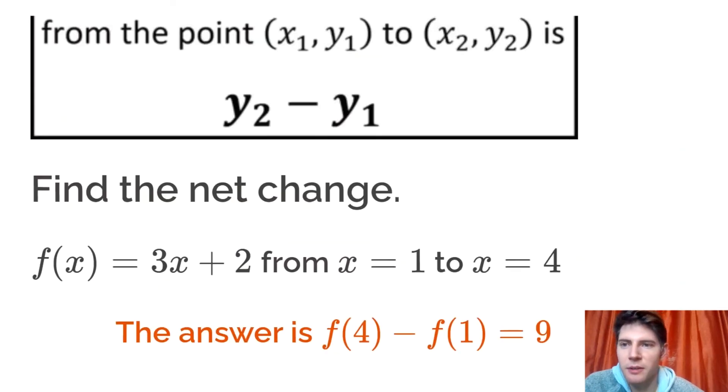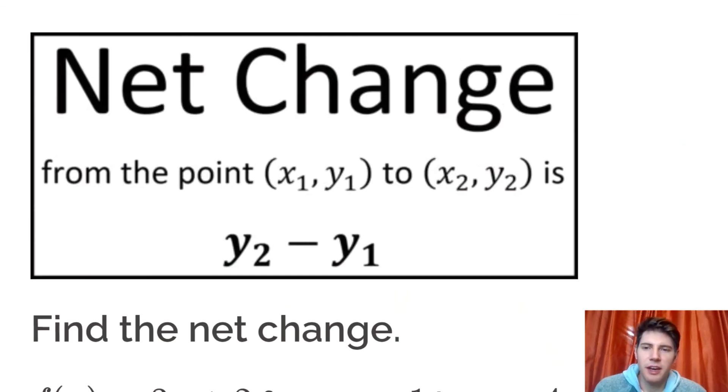I have notes right here, net change. From the point x1, y1 to x2, y2 is just y2 minus y1. Or you can also think of it as f of the second value. If this is a and b, f of b minus f of a. These all mean the same thing.